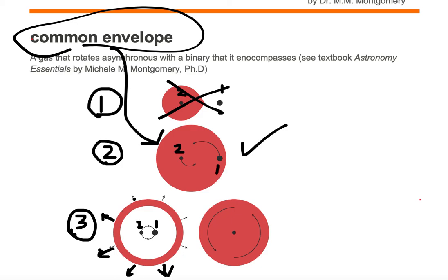The gas is rotating asynchronously, but it's also moving at its own rate outward away from the binary system. And this gas is encompassing the binary, so this would be an example of the common envelope. That's the common envelope.